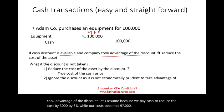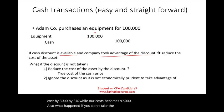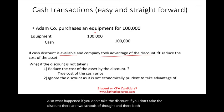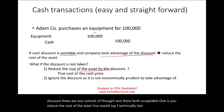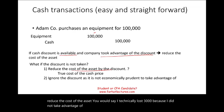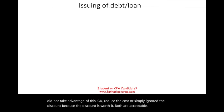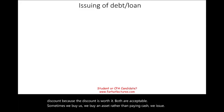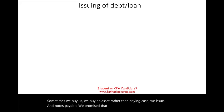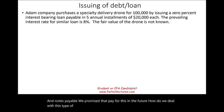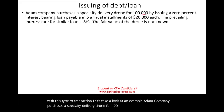What happens if you don't take the discount? If you don't take the discount, there are two schools of thought and they're both acceptable. One is you reduce the cost of the asset — you technically lost $3,000 because you did not take advantage of it. Or simply ignore the discount. Both are acceptable. Sometimes we buy an asset rather than paying cash; we issue a notes payable — we promise to pay in the future. How do we deal with this type of transaction? Let's take a look at an example.